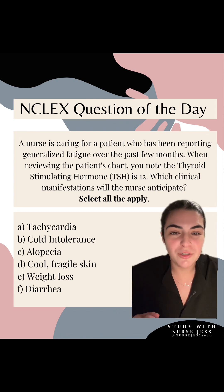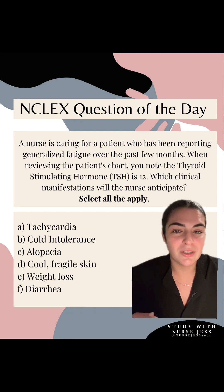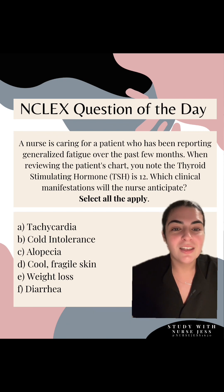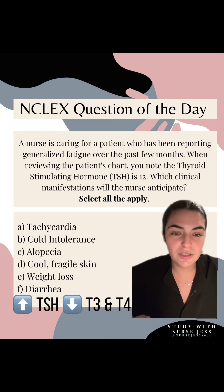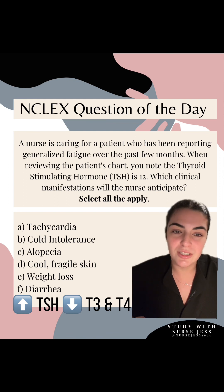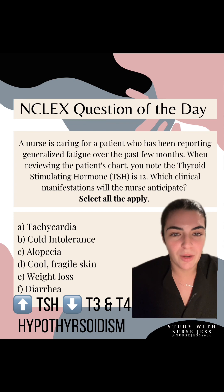Before we go into our answer choices, let's look at this lab value. A thyroid stimulating hormone or TSH is elevated. This is inversely proportional to T3 and T4. So when TSH is elevated, T3 and T4 are decreased, indicating hypothyroidism.